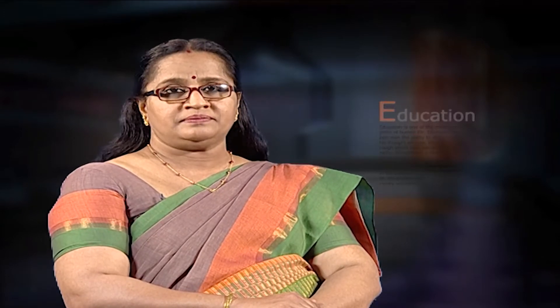Gardner argues that students learn in ways that are identifiably distinctive. The broad spectrum of students, and perhaps society as a whole, would be better served if disciplines could be presented in a number of ways and learning could be assessed through a variety of means. — 'The Unschooled Mind: How Children Think and How Schools Should Teach,' Howard Gardner, 2011.